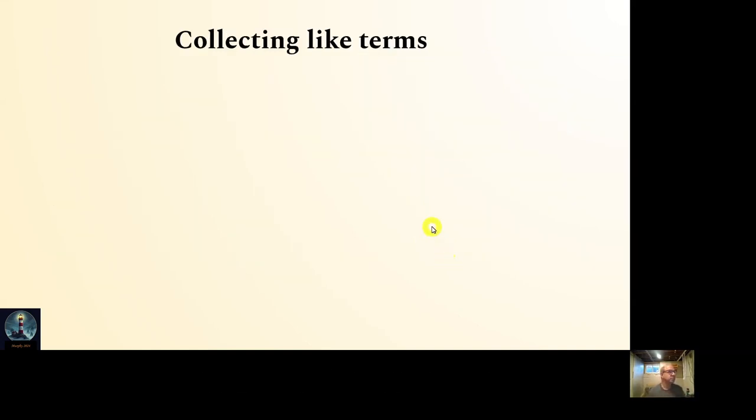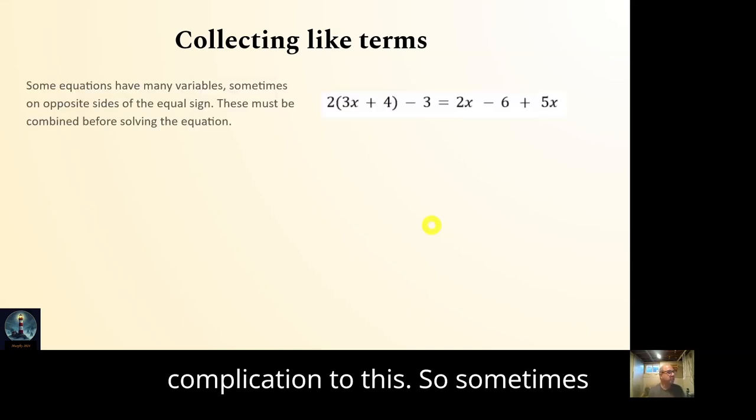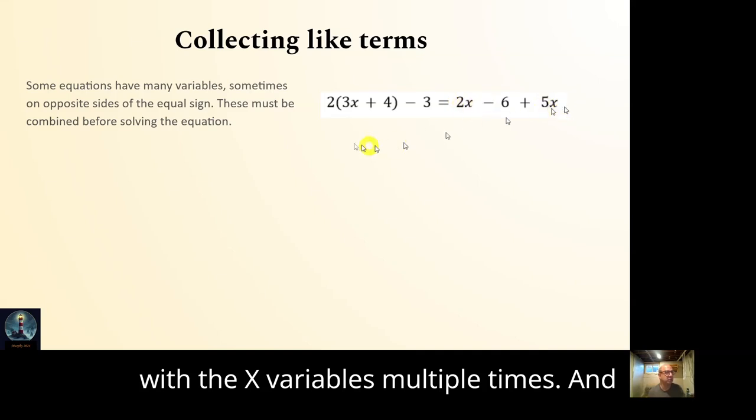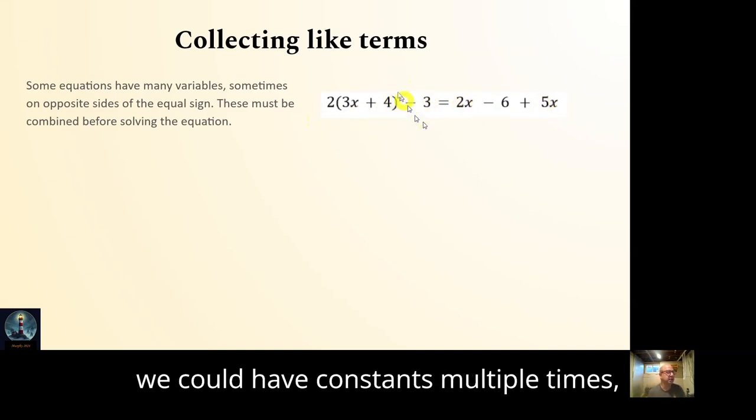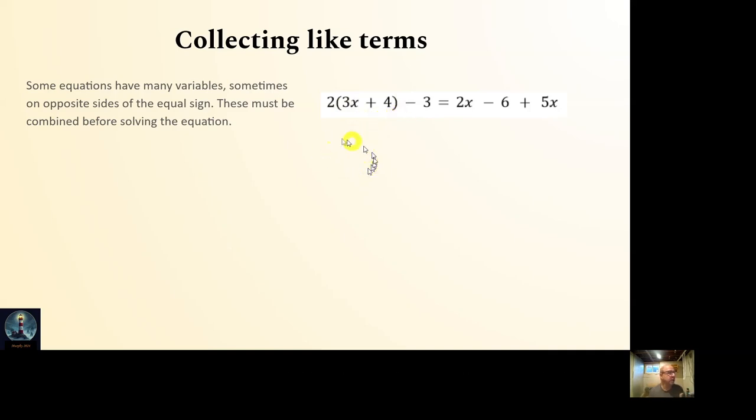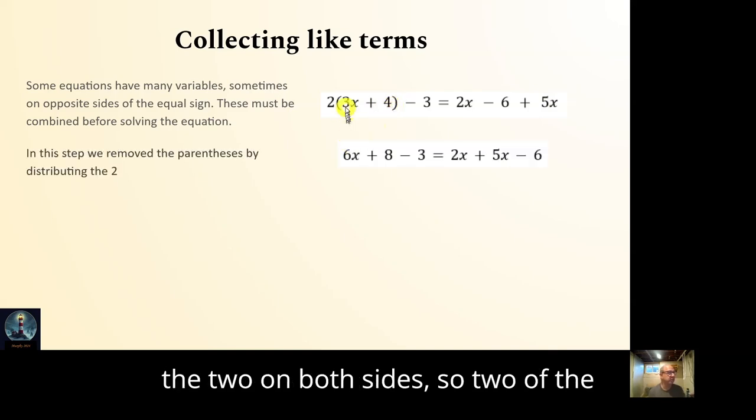But collecting like terms is the other complication to this. So sometimes equations have more than one variable, not more than one variable. They have the same variable multiple times or similar variables, or whatever variables with the x variables multiple times. And we could have constants multiple times. And we could even throw in some parentheses too. So to solve this, I must really kind of combine everything together. Well, the first thing I've got to do is get rid of the parentheses. So I distribute the 2 on both sides.